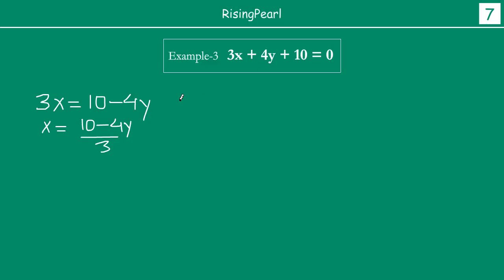Or you can write the same equation as 4y is equal to - actually this is incorrect, because here it will be minus 10 when 10 goes to the other side, and 4y goes to the other side as minus 4y. So it's minus 10 minus 4y divided by 3. And similarly the other way of writing this is you can write 4y equals to minus 10 minus 3x, and this implies y is equal to minus 10 minus 3x divided by 4.